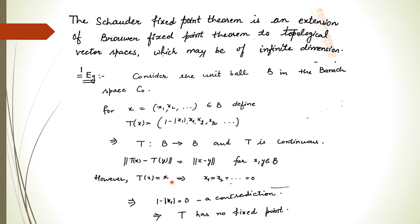If we suppose this mapping has a fixed point, meaning T(X) = X, then comparing the coefficients of each coordinate we get X1 = X2 = X3 = X4 = ... = 0, since X lies in the unit ball. But then 1 − |X1| = 0, giving a contradiction, because from the fixed point equation X1 = |X1| = 1. So T has no fixed point — this is an example in infinite dimension where Brouwer's fixed point theorem fails.